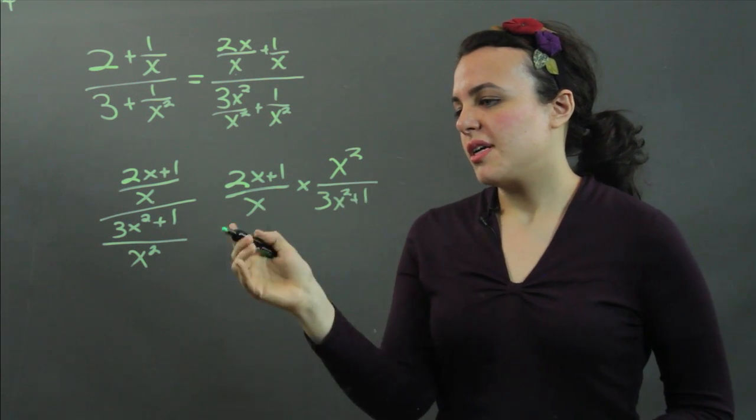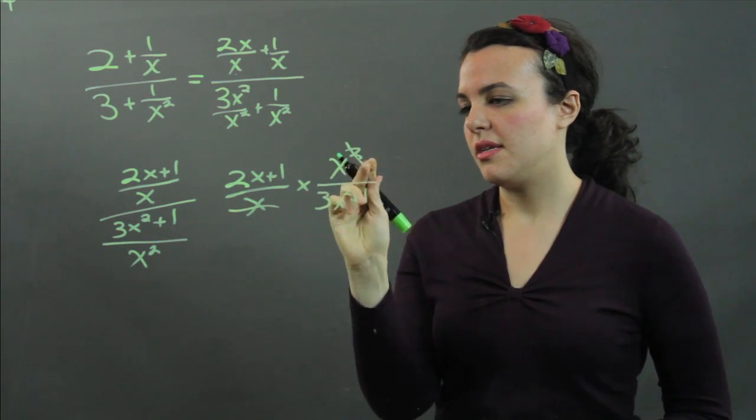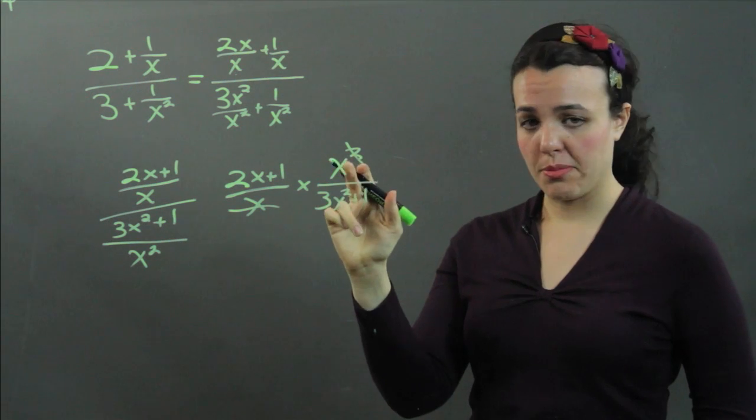Now we can simplify. We can cross cancel here. This x cancels and this drops down to x¹.